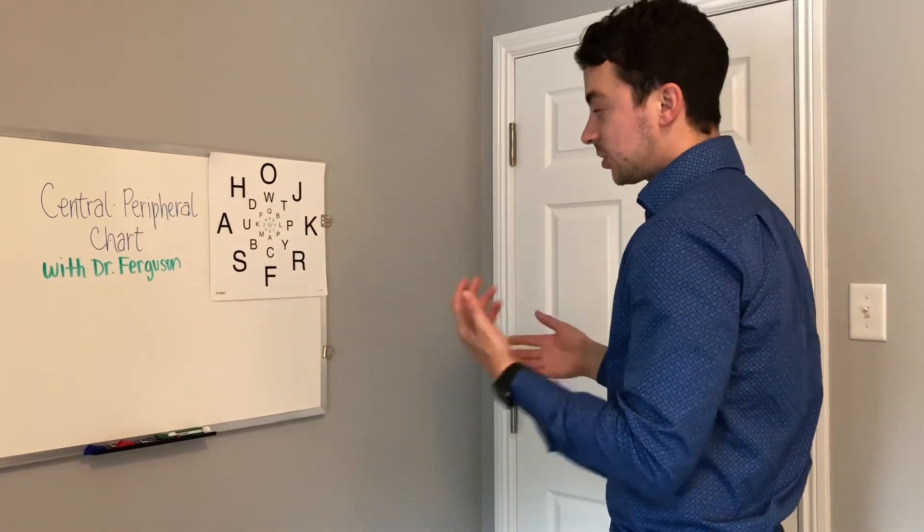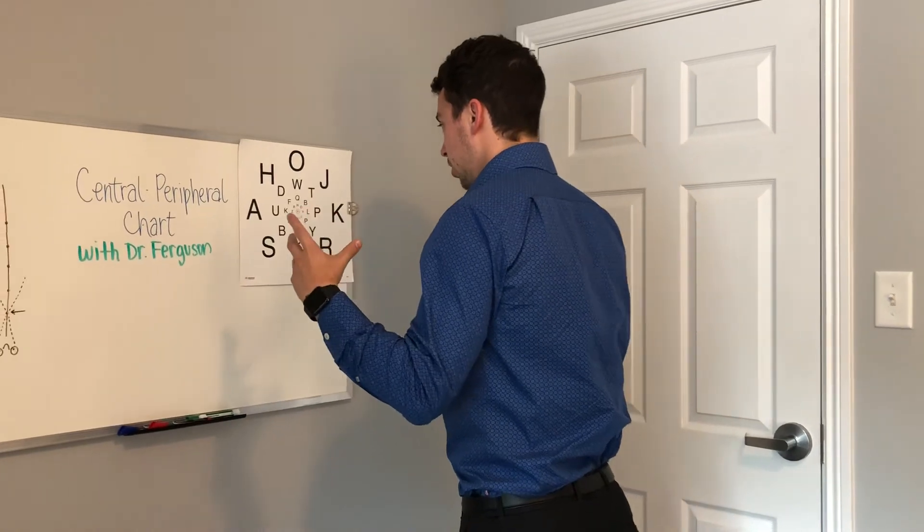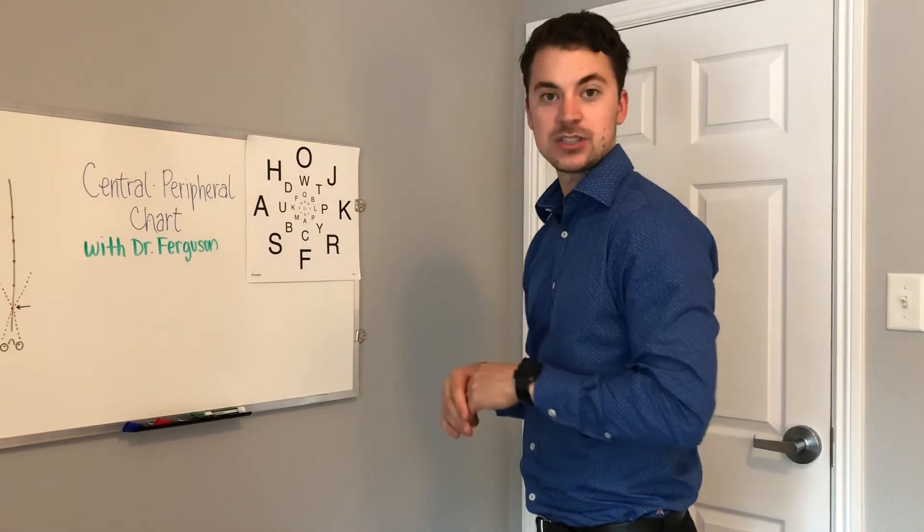Now if that's too easy then you have to take about half a step forward and try again because as you get closer the peripheral letters will get harder to see.